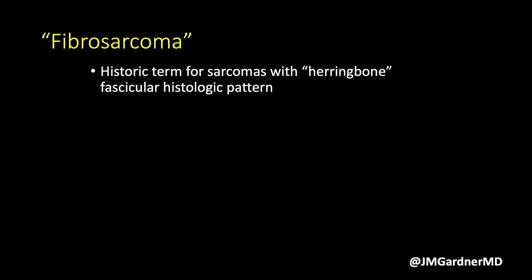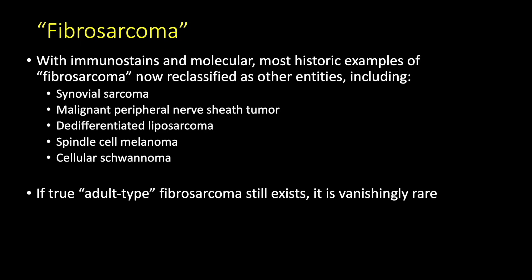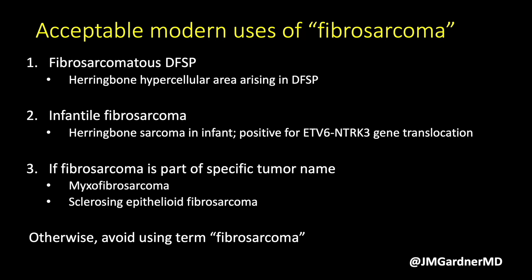Most things with a herringbone pattern are not fibrosarcoma. Adult-type fibrosarcoma is still listed in the WHO bone and soft tissue tumor book, so technically it exists, but it is vanishingly rare. It is a diagnosis I have personally never made in ten years of practice as a soft tissue pathologist. I would rather say spindle cell sarcoma or undifferentiated spindle cell sarcoma if I truly cannot classify it, because statistically if you make this diagnosis you are usually going to be wrong.